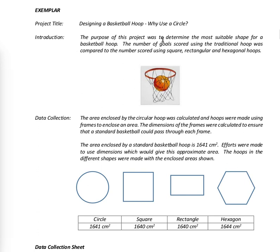The purpose of this project was to determine the most suitable shape for a basketball hoop. The number of goals scored using the traditional hoop was compared to the number of goals scored using a square, a rectangle, and hexagonal hoops. So they're comparing a circle with the square, the rectangle, and the hexagon. The hexagon has six sides.